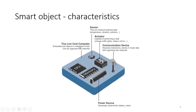A smart object has low-cost computational power — not like a CPU in a smartphone or laptop, but a small processing unit like an Arduino microcontroller or Raspberry Pi board. Most importantly, it must have a communication device, because whatever the smart object senses and measures needs to be communicated. That communication technology is what we will understand in detail.